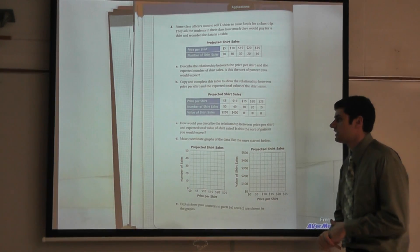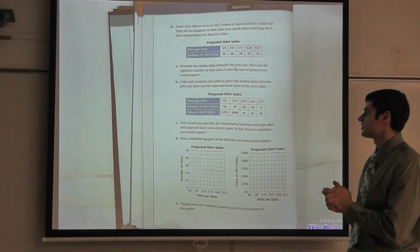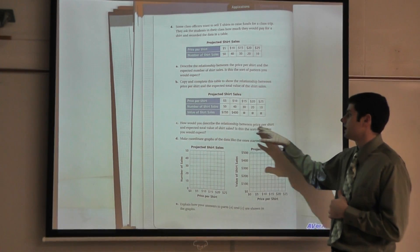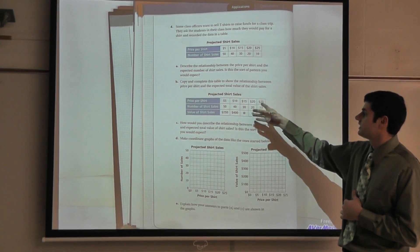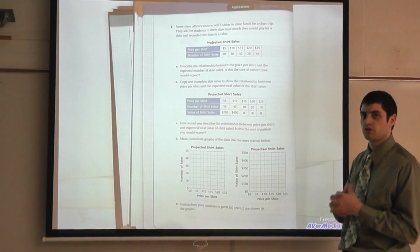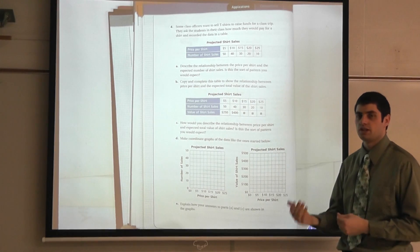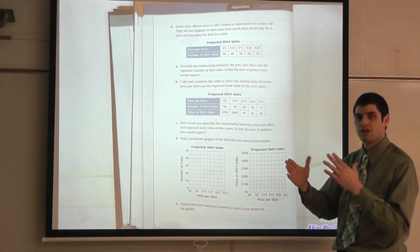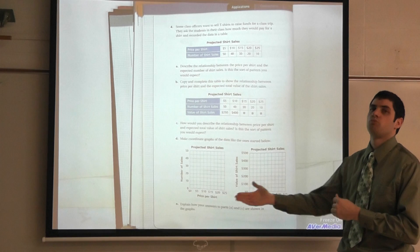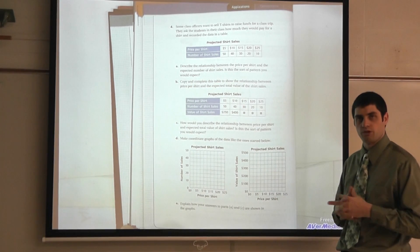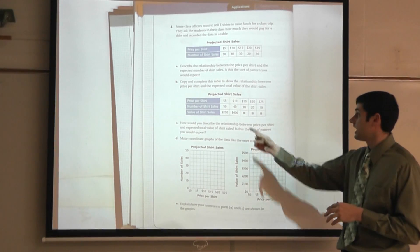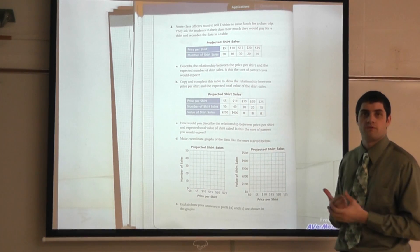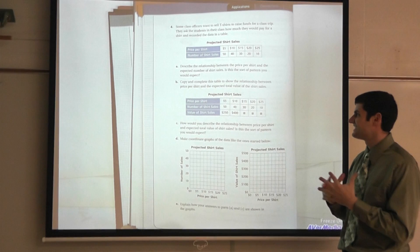Question C asks: how would you describe the relationship between price per shirt and expected total value of shirt sales — is this the sort of pattern you would expect? This is where we start introducing income and profit, which is what salespeople analyze. If I was trying to bring in the most money, I'd want to charge fifteen dollars a t-shirt, because I can get about thirty students and bring in $450 — that's the best business decision.